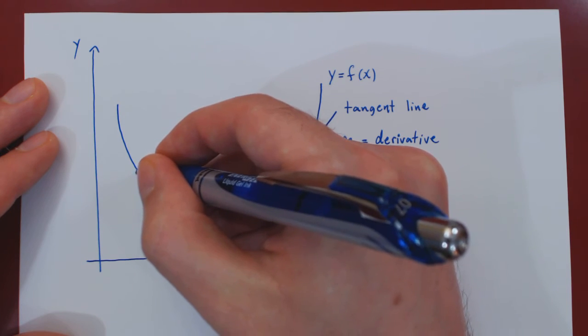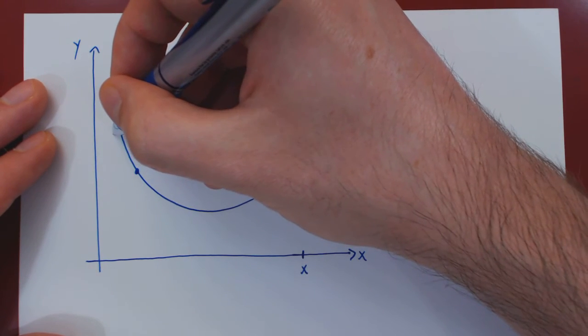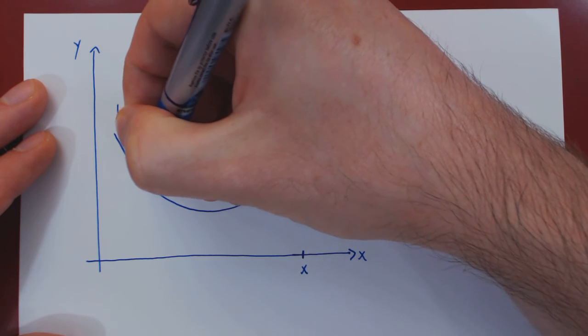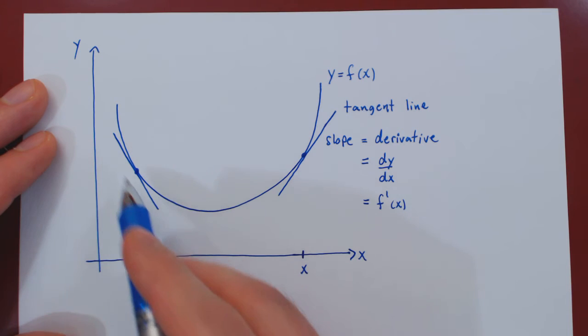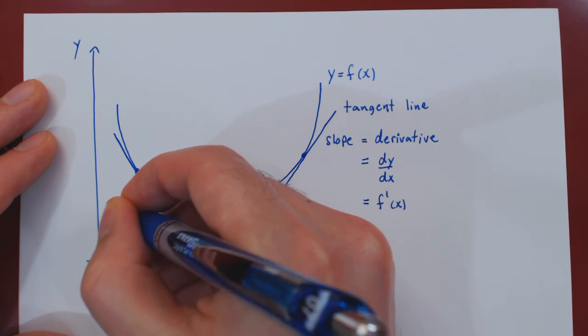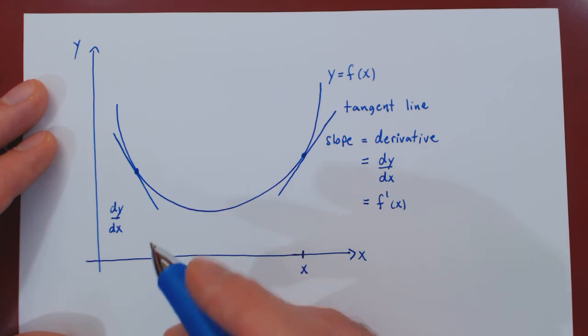Suppose you pick this point now. Well, if you draw the tangent line to the curve, clearly here the slope of this line, again the derivative, so dy over dx, is clearly negative.